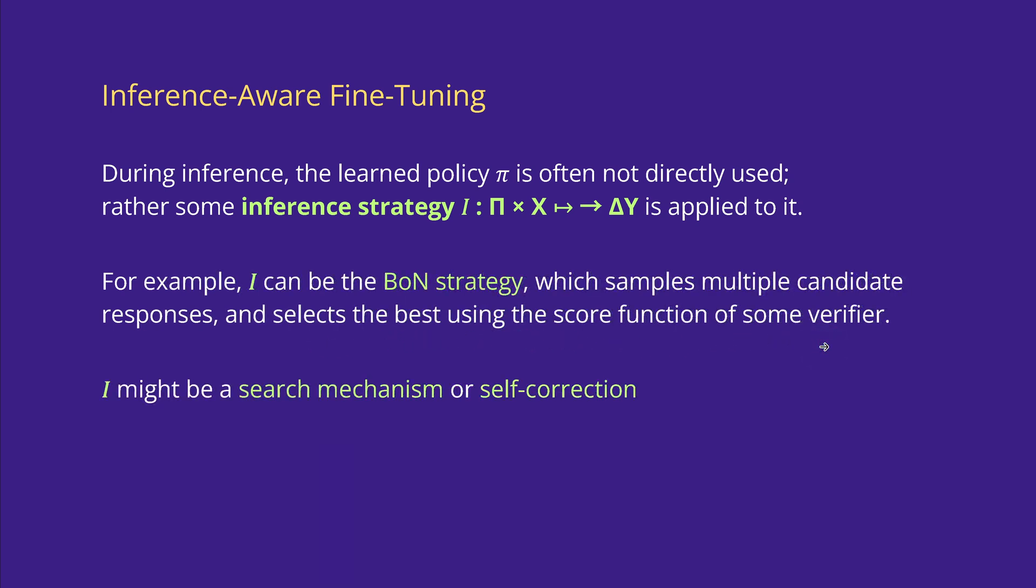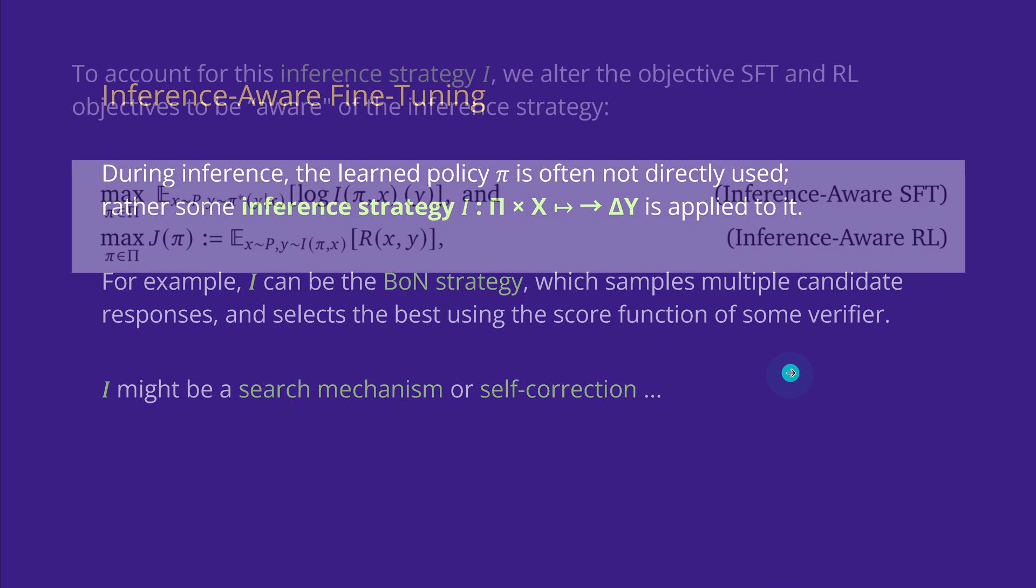I might be a tree search mechanism or a self-correction mechanism or whatever. The beauty of this Google insight is we have a look at an abstract function I, and we will have definite examples here for a best of N strategy.